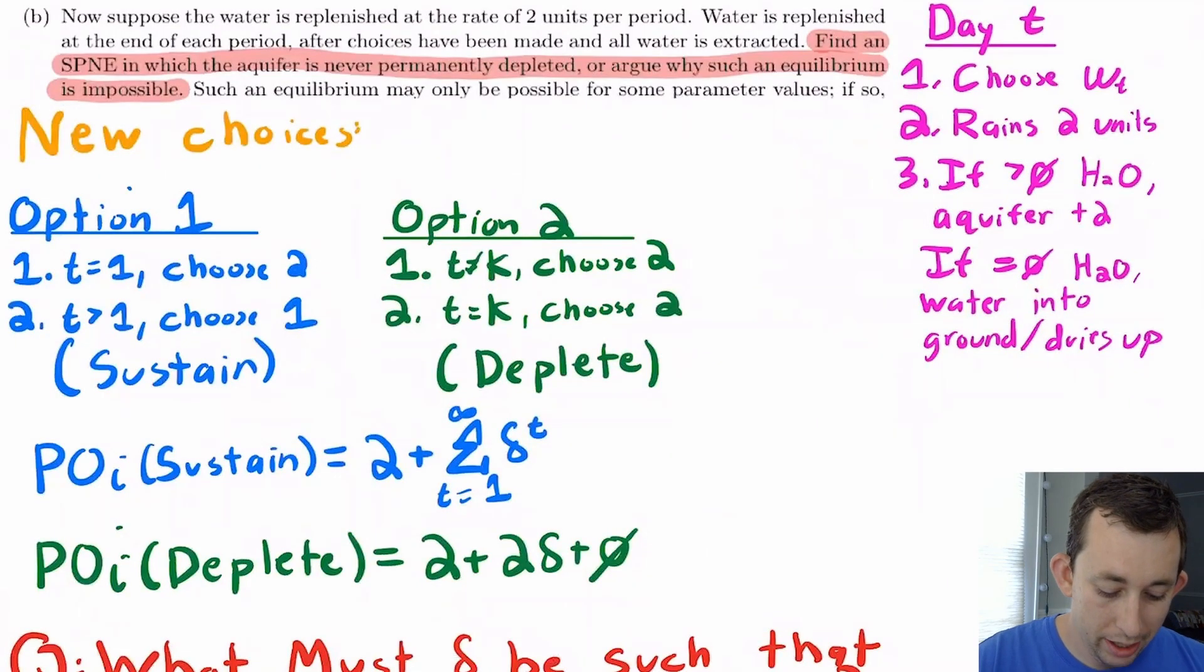Now let's move on to part B. So in part B, notice that we're going to have rainfall. And so water is replenished at the end of the period after choices have been made, and all the water is extracted. So what I like to do for this is I like to write out a more concise version or notes to myself on the side. So here's how the game works.